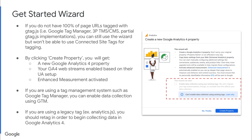Here we'll go ahead and continue to use this wizard so that we can create a new Google Analytics 4 property. We'll click Create, and you'll get a new Google Analytics 4 property, your GA4 web streams enabled based on your Universal Analytics setup, and enhanced measurement activated.